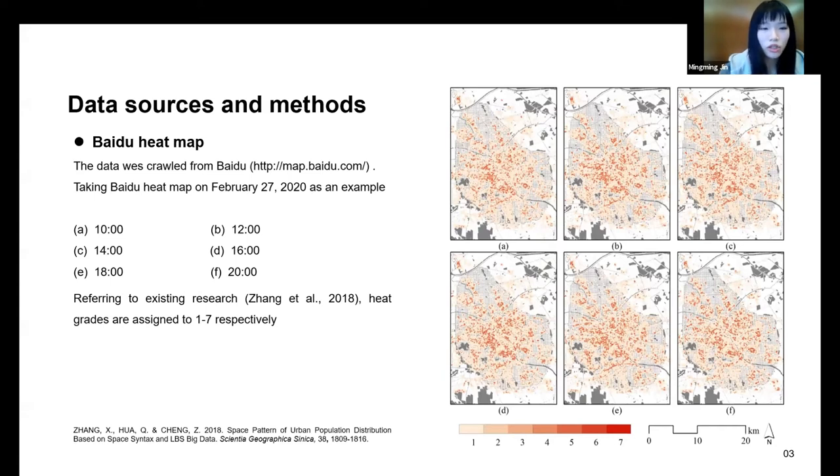The PowerPoint shows the Baidu heatmap at several points on February 27th. Referring to existing research, we divide the heat grid into 1-7. Urban population dynamics is an important representative of urban operation. We use an indicator to measure the population density of the unit. A high value represents high population density. Considering the fluctuation in the number of users within a day, we select a period when the number of users is stable.